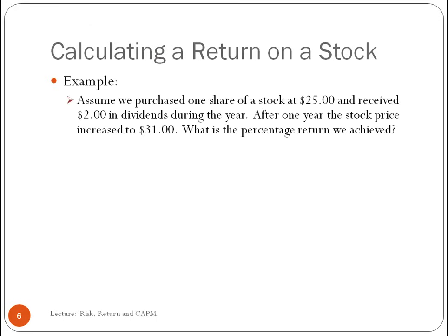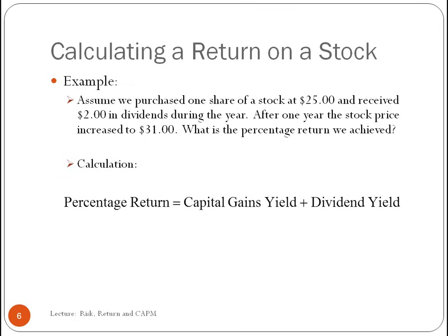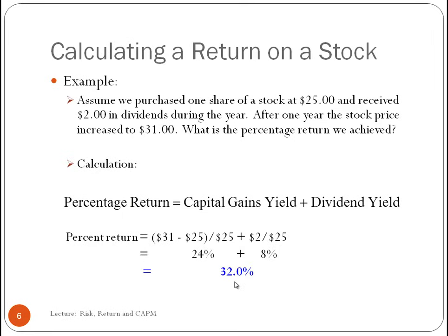For example, assume we purchased one share at $25, received $2 in dividends, and after one year the stock price increased to $31. The percentage return equals (31 − 25) / 25 + 2 / 25. The capital gains yield is 24% and the dividend yield is 8%, giving a total return of 32%.